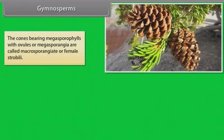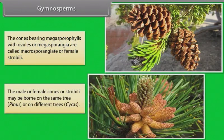The cones bearing megasporophylls with ovules or megasporangia are called macrosporangiate or female strobili. The male or female cones or strobili may be borne on the same tree like Pinus, or on different trees like Cycas.